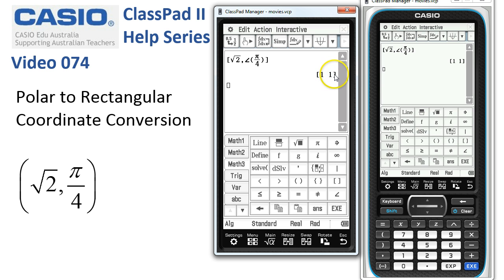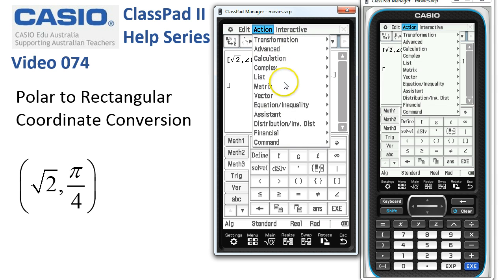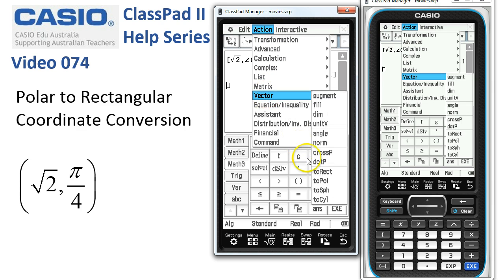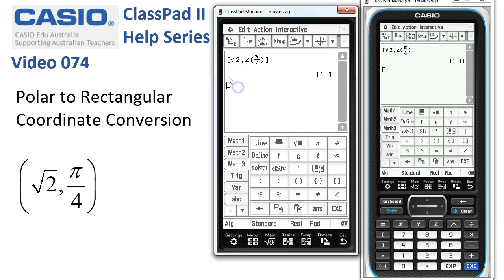That converts straight away into Cartesian form as 1 comma 1. Now there is a function that would have done that, action, where are we looking here, under the vector to rectangular. We didn't actually need it because ClassPad by default likes to display coordinates in rectangular form.